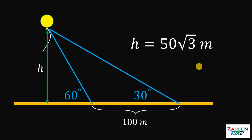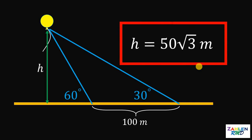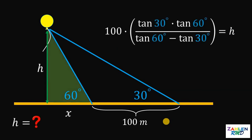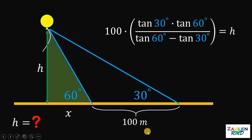We are done. Now we can generalize this situation. Going back to our solution, h = 100 × tan(30°) × tan(60°) / [tan(60°) − tan(30°)], where 100 is the distance between the two points. What if that distance is not 100 meters — maybe 90 meters, 90.5 meters, and so on? Let's replace 100 with a variable y.